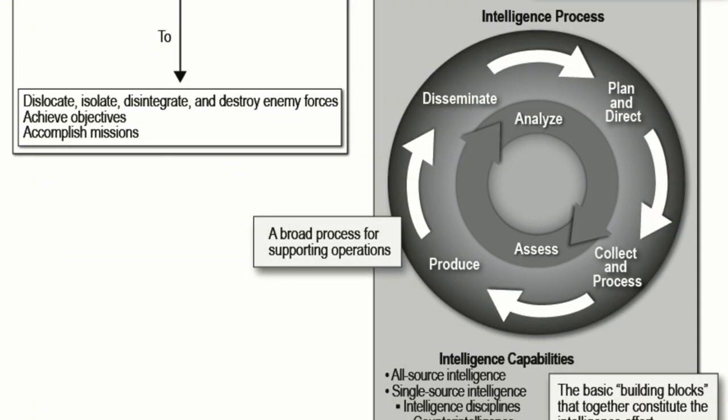Looking at the intelligence process, it's kind of an OODA loop. The intel process is to plan and direct, collect and process, produce, and then disseminate — and then that just continues. On the inside of that circle, you consistently analyze and assess. That in and of itself is the intelligence process. It's what the folks in the intel business are constantly doing — it's a loop, constantly cycling, never complete because things always change.